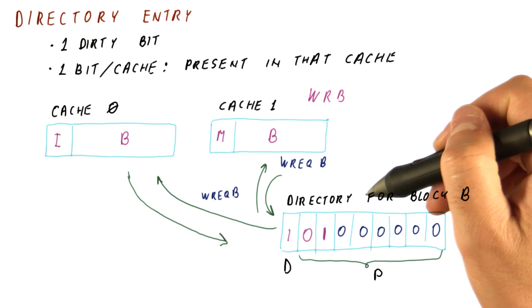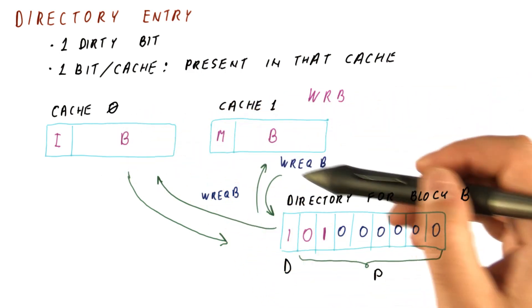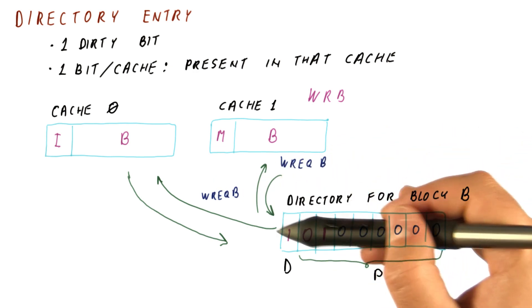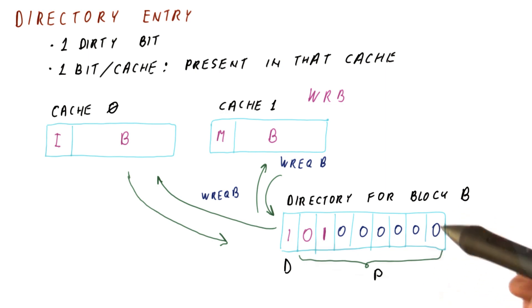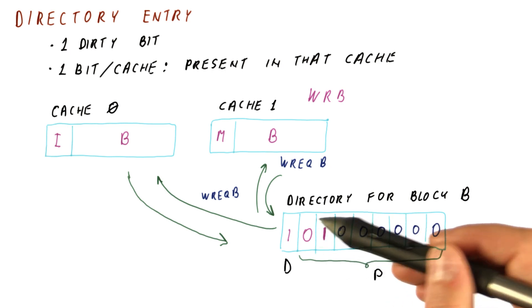So as you can see, this is how the caches can do their normal coherence. But now instead of everybody seeing everything, we need to send requests to the directory, which then sends out the messages that need to be sent, only to those caches that actually might have the block. So if a block is shared by only two cores, then we will be only sending a very few messages.